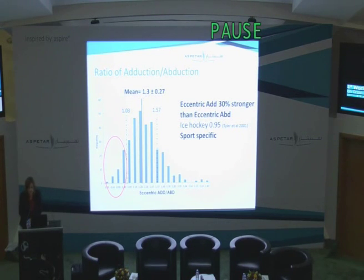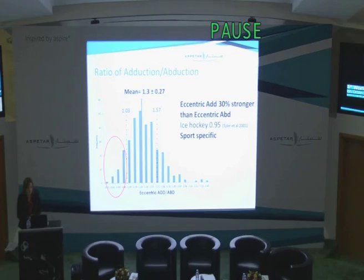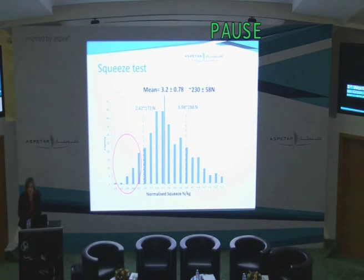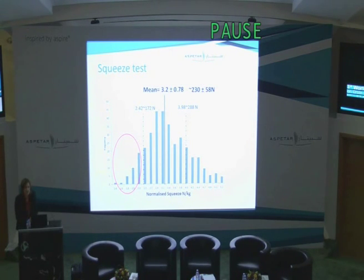The players we might be really interested in are those sitting outside one standard deviation of less than 1. In Tim Tyler's study, the equivalent ratio was 0.78. So in our football cohort, players sitting outside the first standard deviation have equal adduction to abduction strength — quite an interesting finding. In terms of the squeeze test, normalised to body weight, the mean is equivalent to about 230 newtons. Athletes that sit outside the one standard deviation are lower than 172 newtons for the squeeze test, which fits with our clinical findings when measuring athletes. The squeeze test score has never been looked at in prospective studies, so it will be really interesting to see how predictive this is of those athletes that develop groin pain.